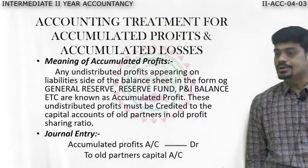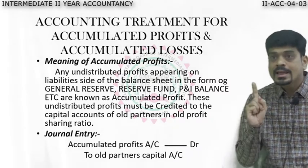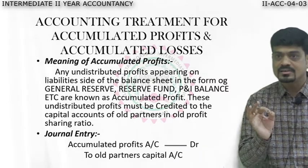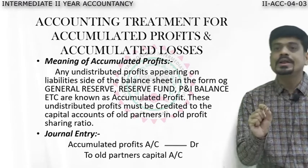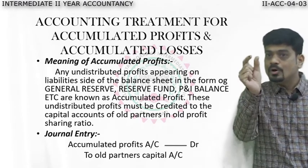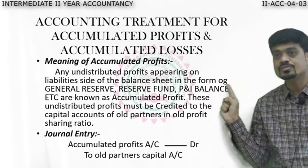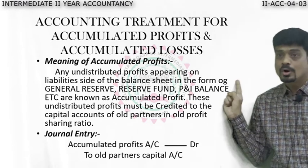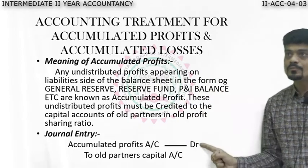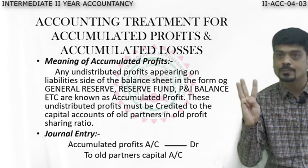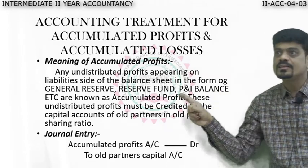An important point: accumulated profit is a liability. Liabilities show a credit balance. Whenever we prepare the accumulated profit account, that amount will appear on the credit side as 'by balance brought down.' To summarize: the three examples of accumulated profit are general reserve, reserve fund, and profit and loss account. They appear on the liability side, and they must compulsorily be distributed among old partners in the old profit ratio.